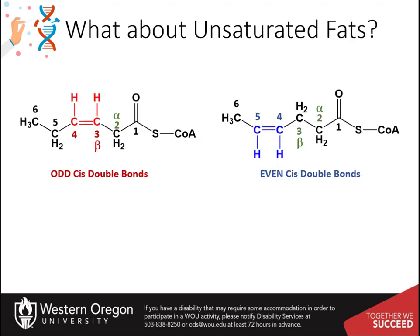So what happens when you have unsaturated fatty acids? How do the double bonds affect beta oxidation? There can be two possible scenarios: one where the cis double bond starts at the odd numbered carbons, or one that starts between an even numbered carbon.